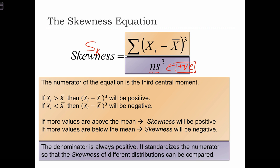But let's look at the top. When xi is greater than x-bar, we're going to have that xi minus x-bar is positive, and the cube of that will also be positive.